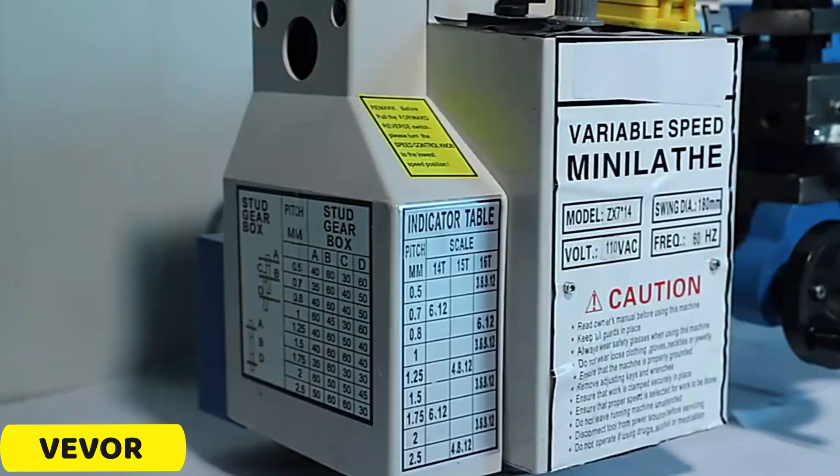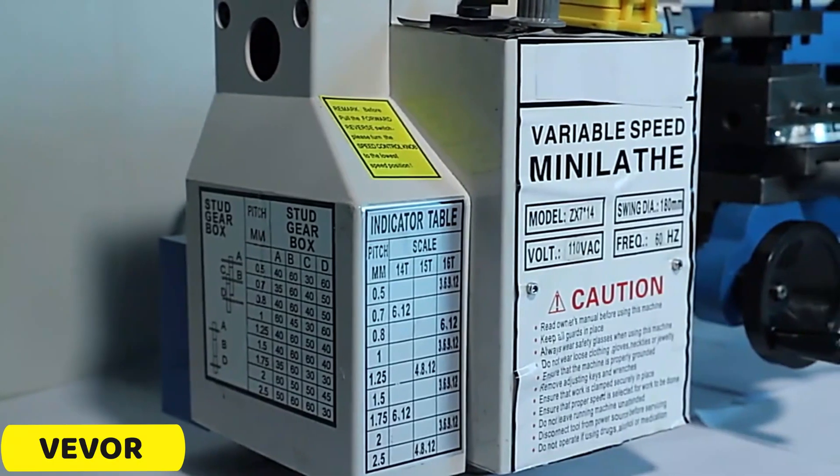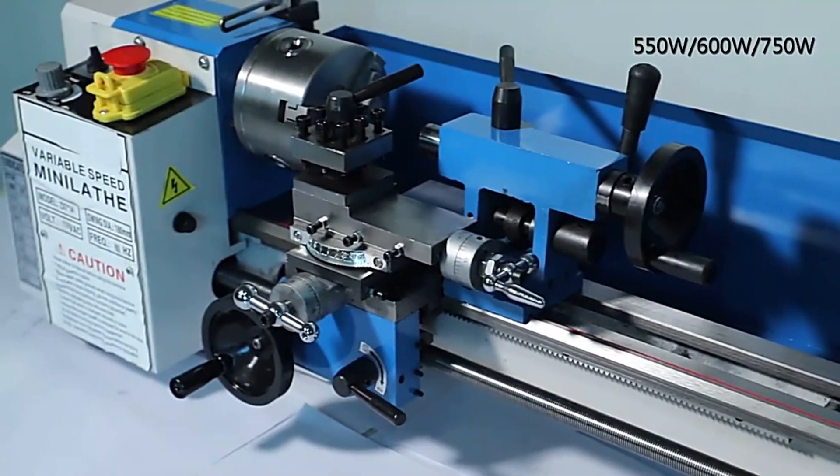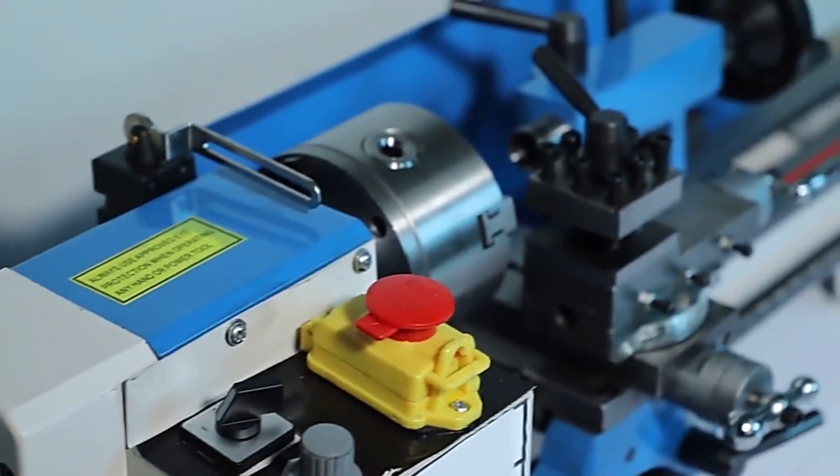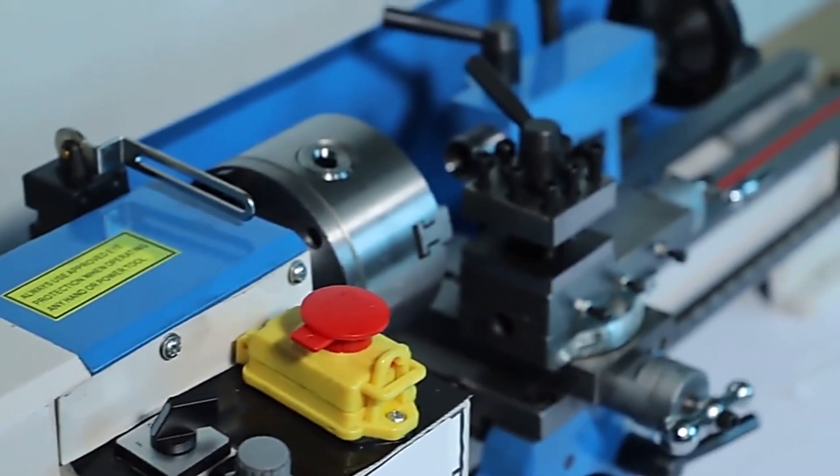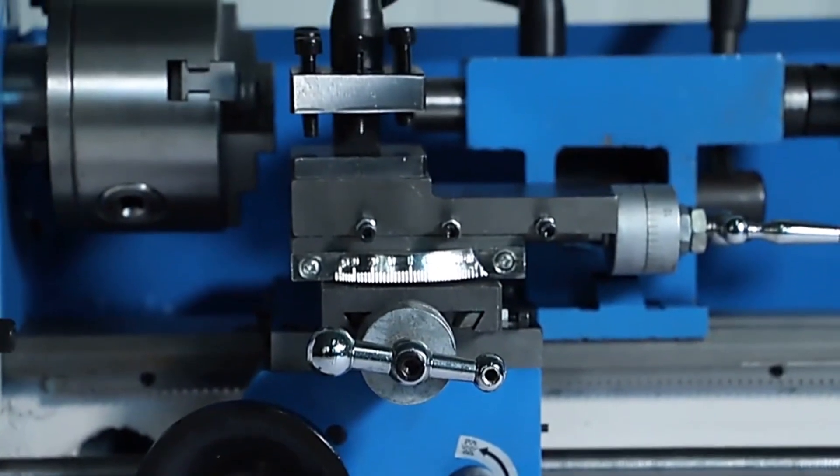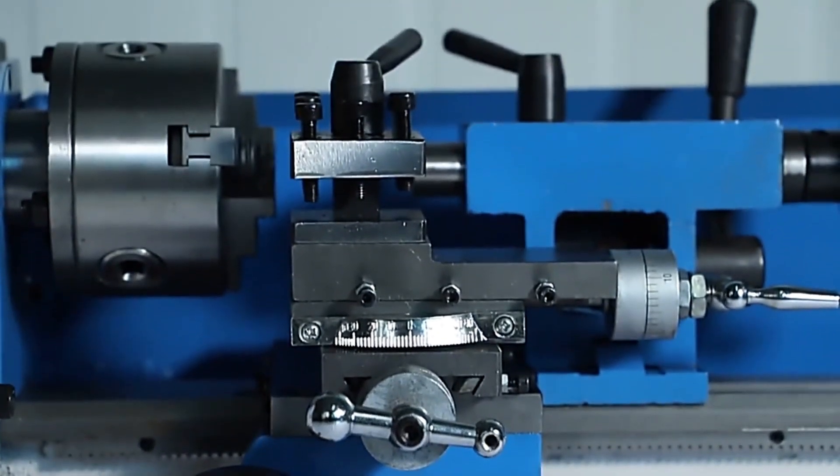Number 1. Vever Metal Lathe. The Vever Metal Lathe is a versatile metal lathe with a 550W DC single-phase motor, offering a wide range of variable speeds from 50 to 2500 rpm. Its robust 550W DC motor ensures smooth and precise cuts, making it suitable for both beginners and experienced machinists.